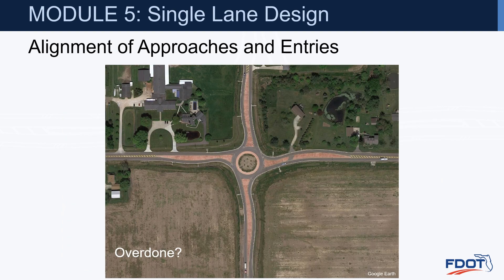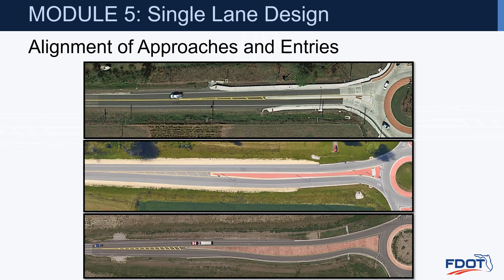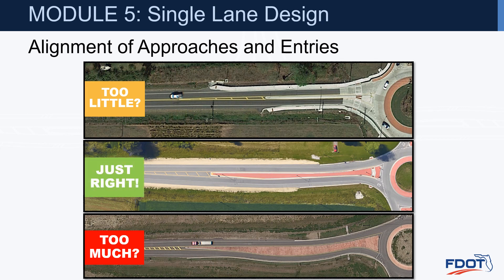Another example might be overdone — with excess curvature, a pretty harsh first radius, a lot of deflection, large splitter islands, and extra width. It will definitely get vehicles to slow down, but is that much curvature needed? Comparing the three alignment examples: one probably has too little curvature, another has too much, and the one in the middle is just about right — just enough to alert the driver and get them to slow down.